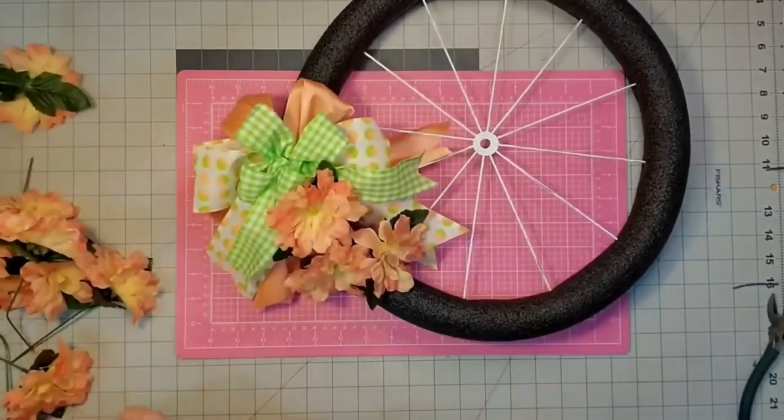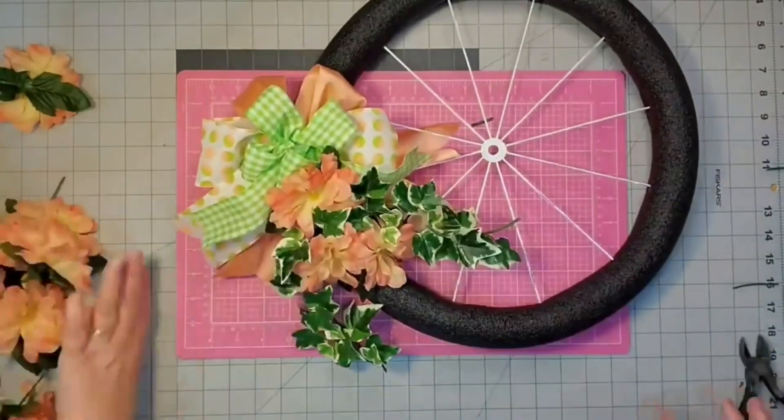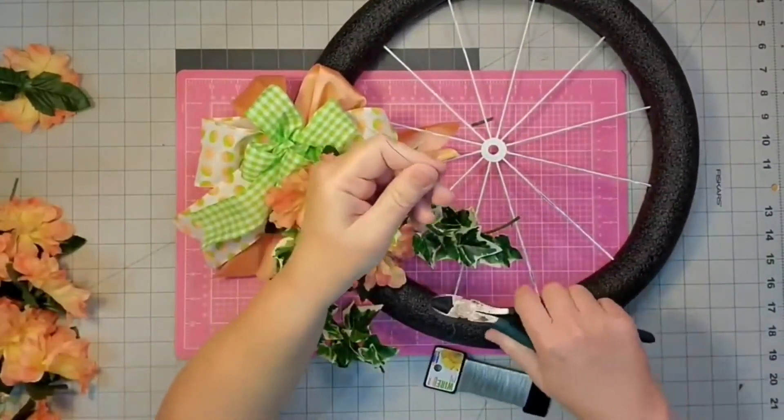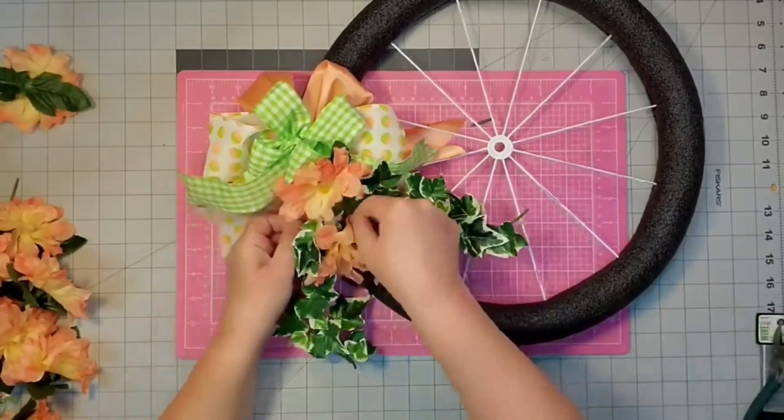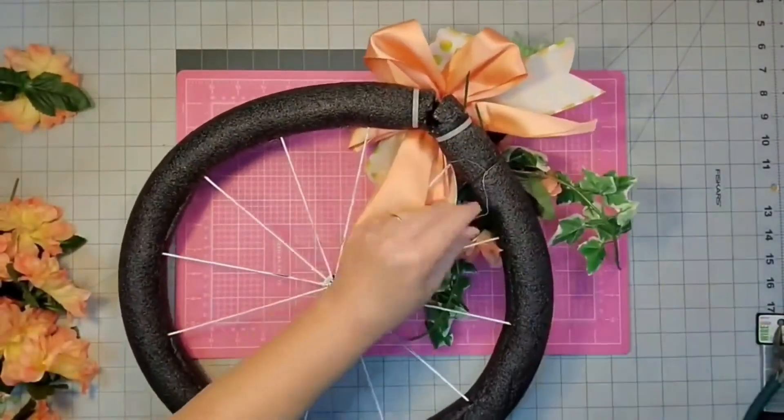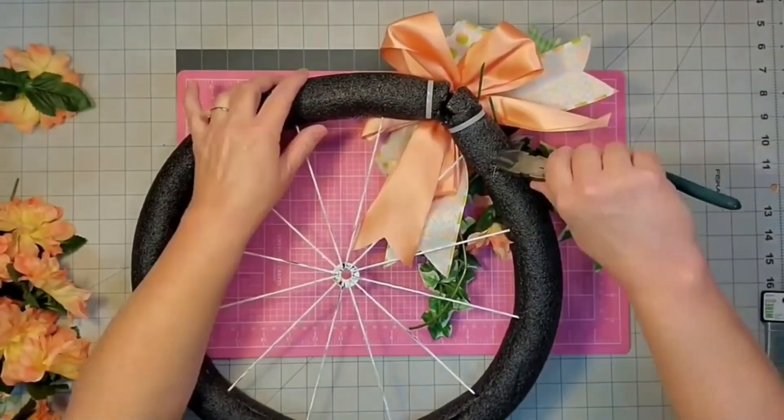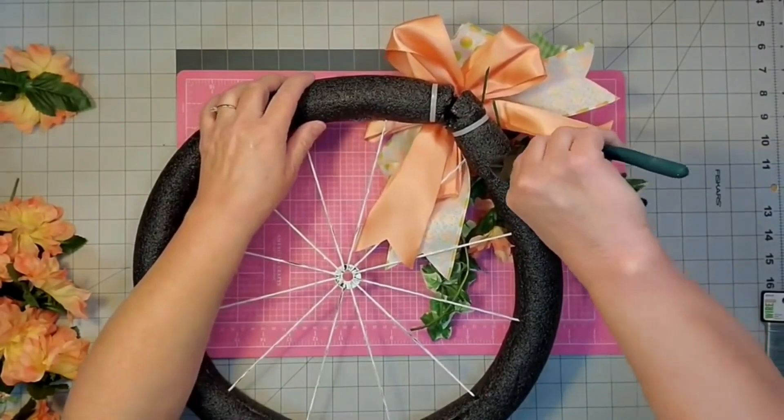For this green ivy I'm just going to twist it down right in the middle of my flowers and then I'm going to attach it with some floral wire and once I cut off the ends of my floral wire I'm just going to poke it down into that foam once again and also I'm going to use a little hot glue on top. I just want to make sure it doesn't scratch anyone's door.